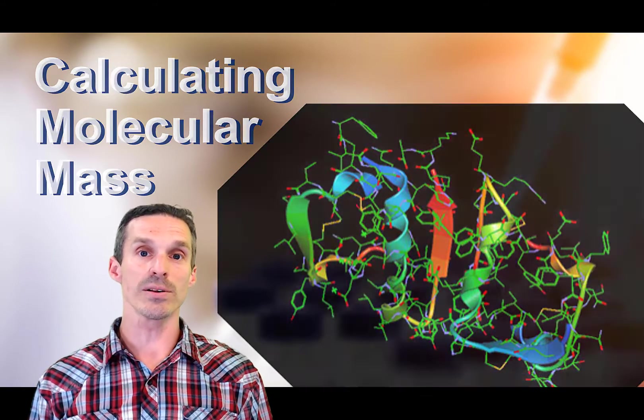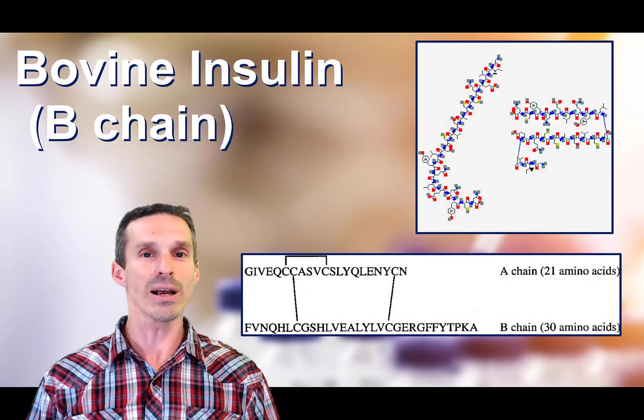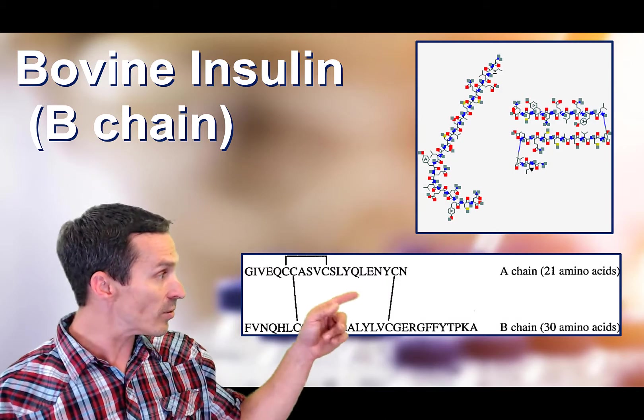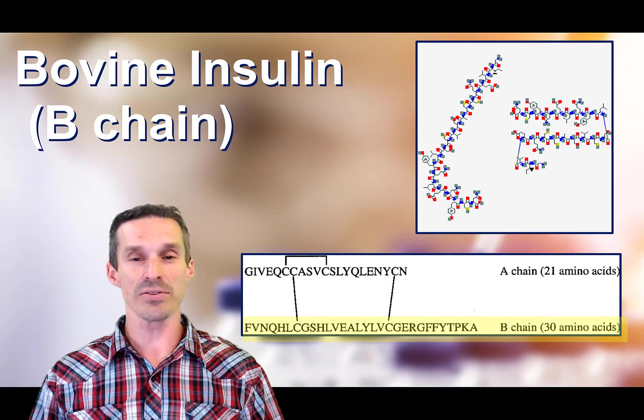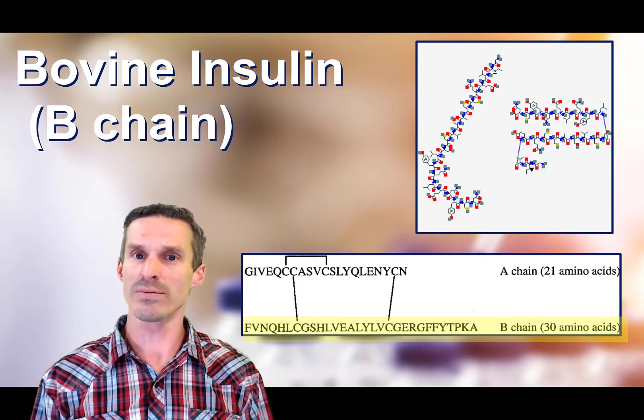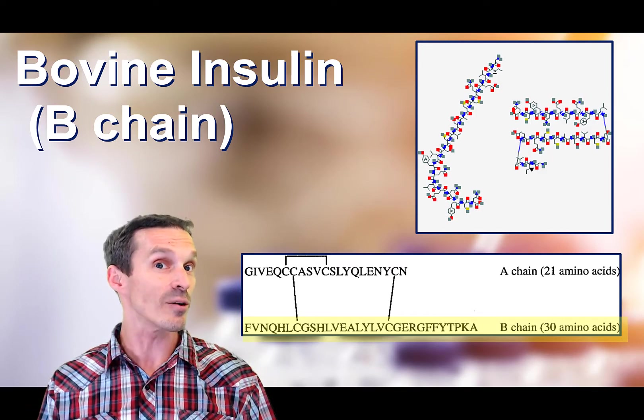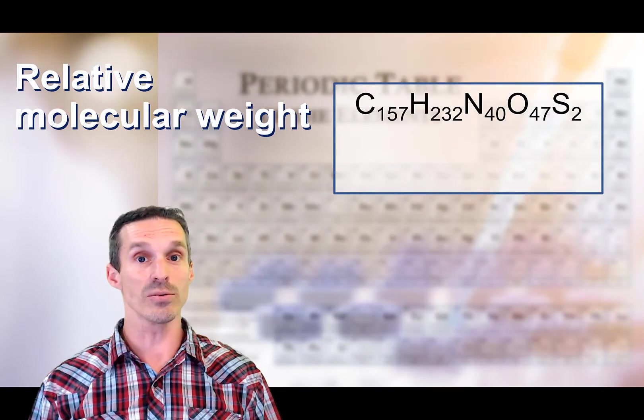The structure corresponds to something called insulin, well actually it's just the B chain of insulin. You're looking at those sequences down there, which doesn't really give us much information other than the amino acids. Well actually it gives us all the information, it tells us exactly what the chemical structure of this compound is, that's what we need to know to determine the mass.